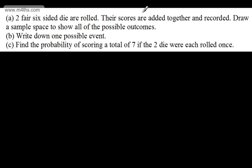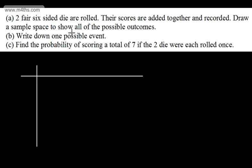Next question: two fair six-sided dice are rolled. Their scores are added together and recorded. Draw a sample space to show all of the possible outcomes. We're going to sketch this up. We'll put an addition symbol in the top-left corner, label one axis as dice one and the other as dice two.